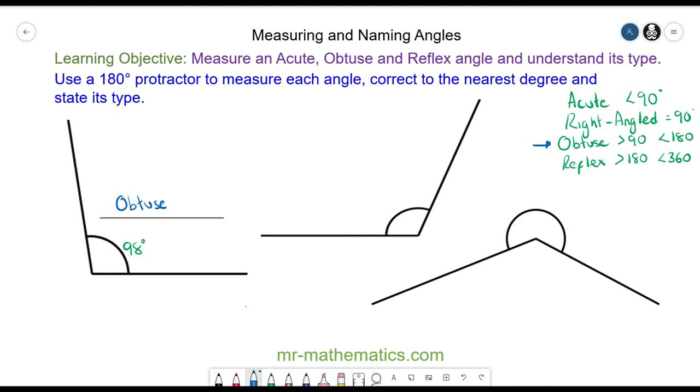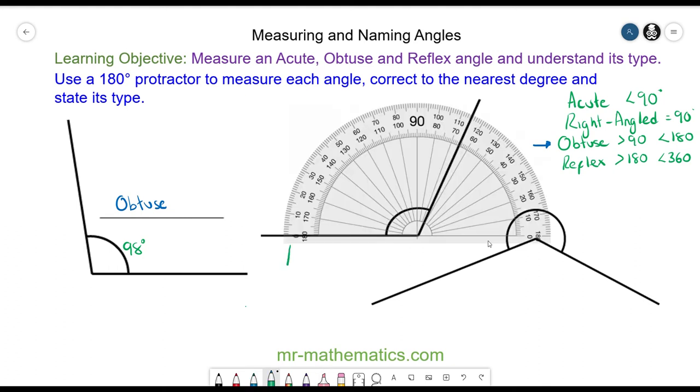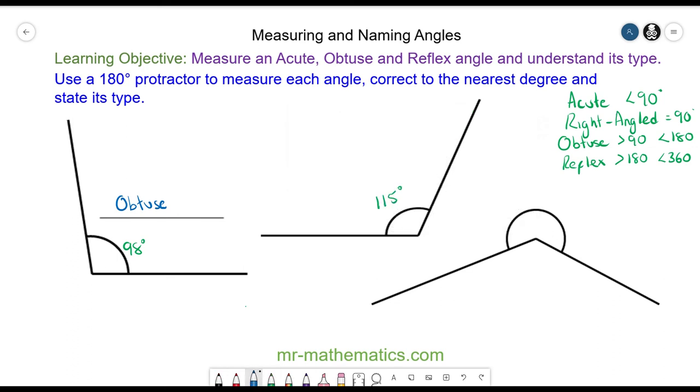Let's try the next angle. So we are going to use the top scale and we are going to go in a clockwise direction starting from zero to 20 to 40 to 60 to 80 to 100 to 110 and 115 degrees. And again because it is greater than 90 but less than 180 it is another obtuse angle.